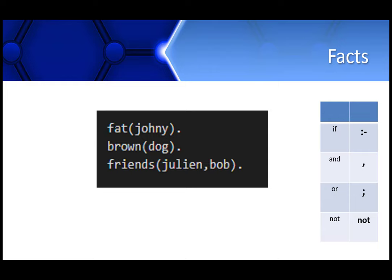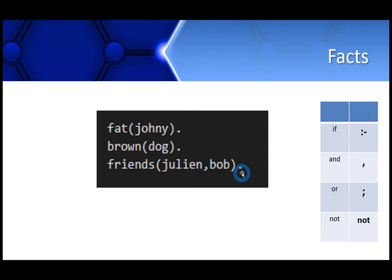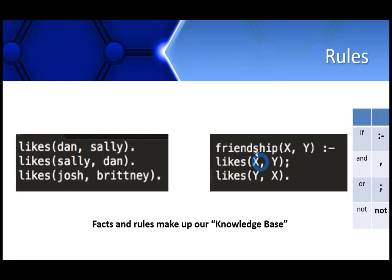Now let's learn about facts and rules in more detail. The knowledge base comprises of facts and rules, so let's take the example of facts first. This is how I will write a fact in Prolog — the syntax involves writing the relation or quality, followed by the name in brackets. For example, 'fat(johnny)' means Johnny is fat, 'brown(dog)' means dog is brown, and 'friends(julian, bob)' means Julian is friends with Bob. You always put a full stop at the end of every statement in Prolog.